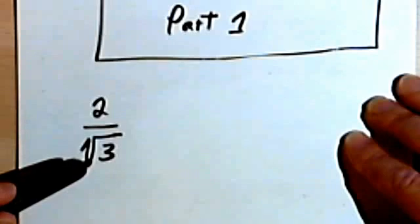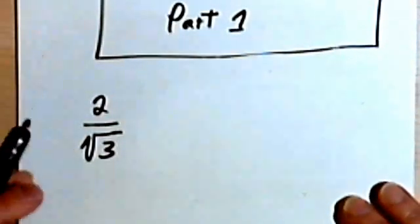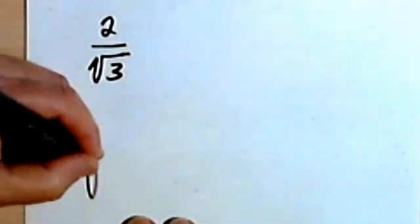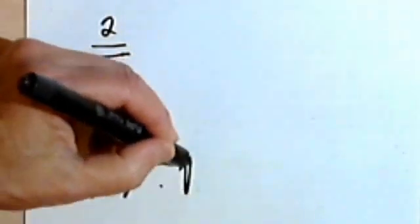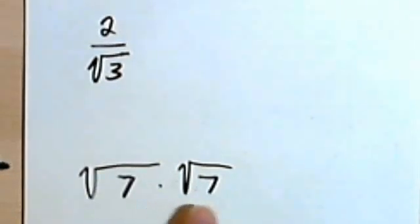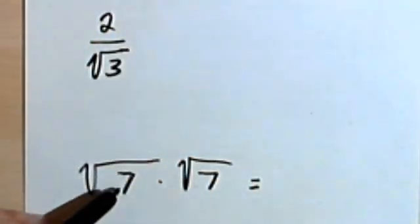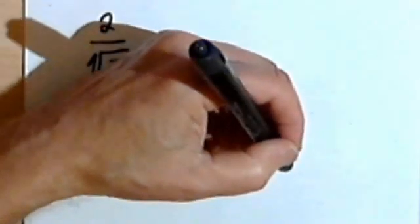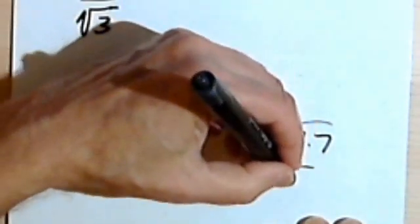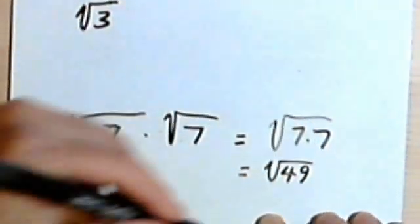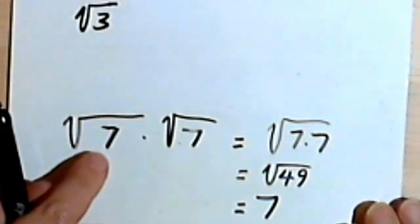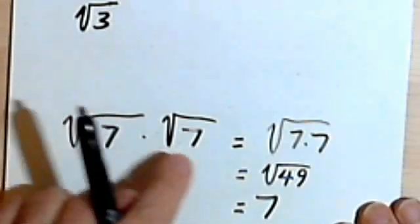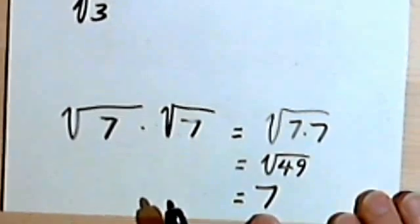Getting rid of the square root is going to be fairly easy if we realize there's a simple trick we can use. Let's say we take the square root of any number — I'm going to use 7 as an example. If we multiply a square root by itself, in other words if we square a square root, the square root of 7 times the square root of 7, using the product rule, is going to be the square root of 7 times 7, which is the square root of 49, and the square root of 49 is 7. No matter what number we start with under the radical sign, if we multiply that radical by itself, we end up with the number without the radical.